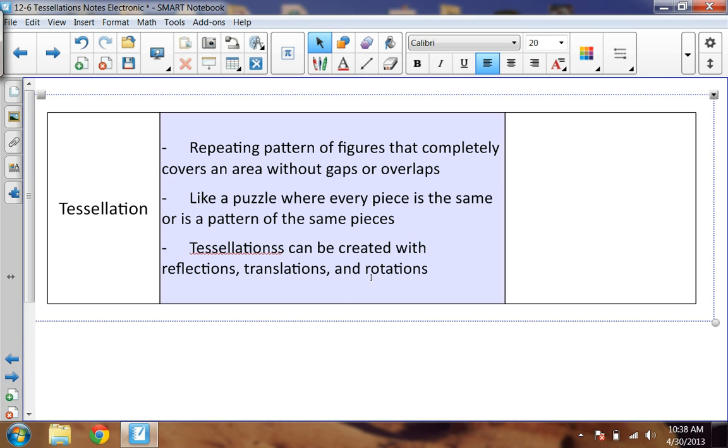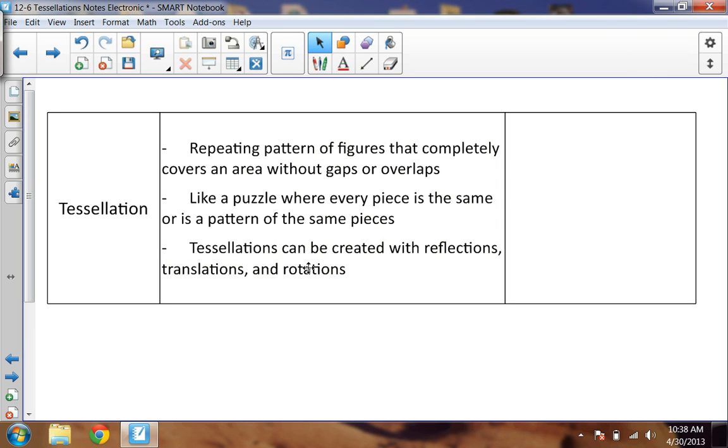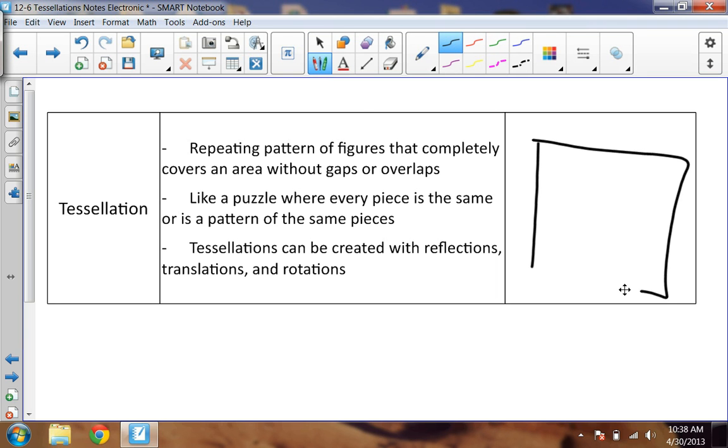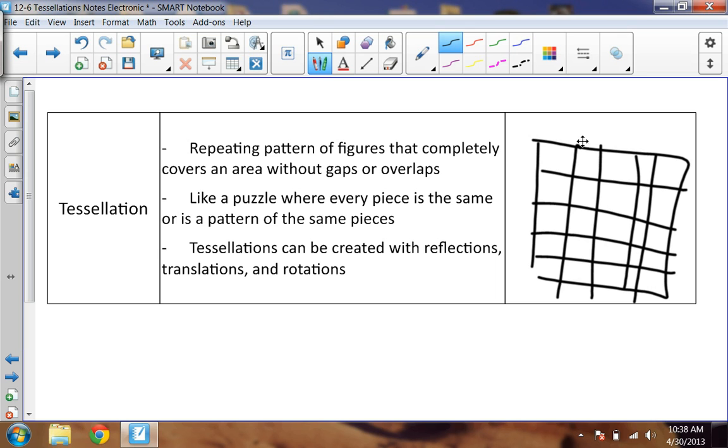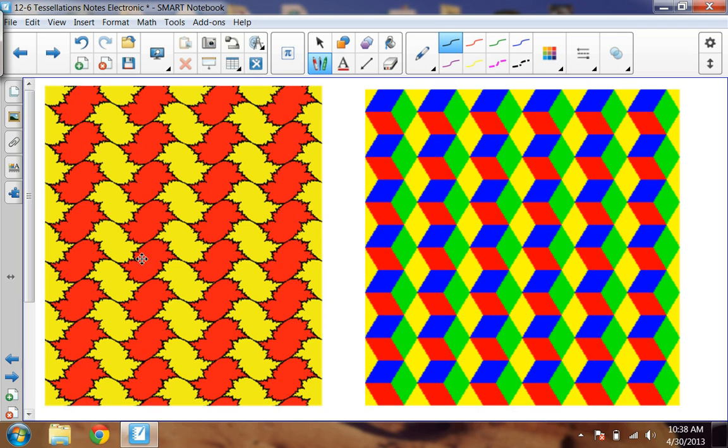Tessellations can be created with reflections, translations, and rotations. And again, you can use glide reflections as well. I don't really want to draw anything too special. But think of a tessellation as, here's a pattern of a grid like so. This is a tessellation of squares. Assuming these were all the same thing, this is a floor tiling of sorts.